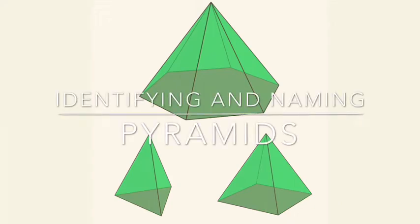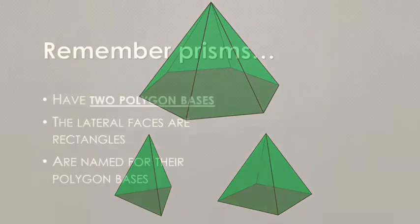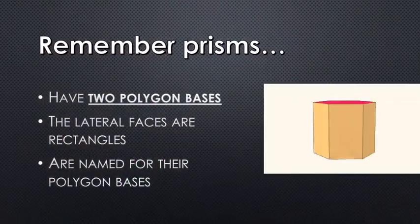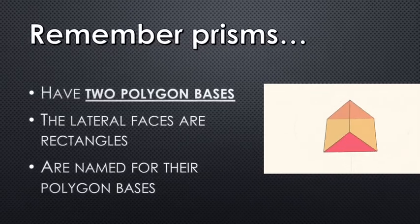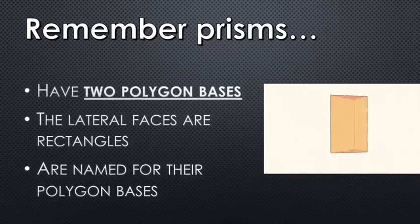Identifying and naming pyramids. Remember, prisms, unlike pyramids, have two polygon bases, the lateral faces are all rectangles, and they're named for that special polygon base, like this triangular prism.